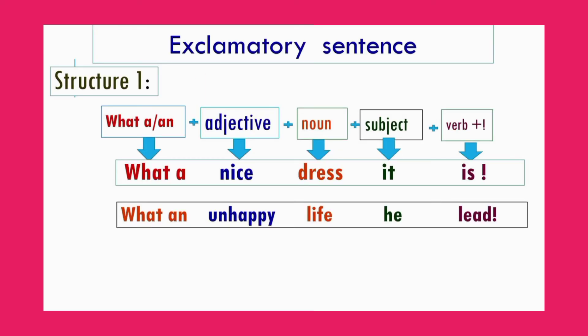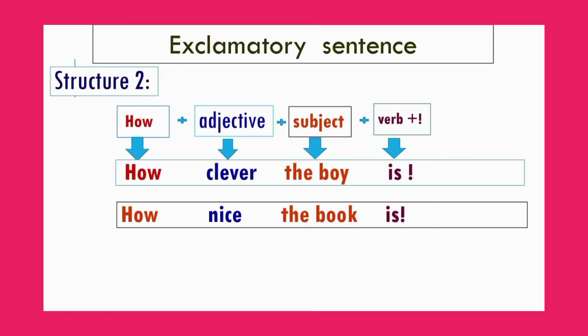Exclamatory sentences can be formed in four structures. Structure 1: What a / What an + adjective + noun + subject + verb + exclamation sign. Such as: 'What a nice dress it is!' 'What an unhappy life he leads!' Structure 2: How + adjective + subject + verb + exclamation sign. Such as: 'How clever the boy is!' 'How nice the book is!'